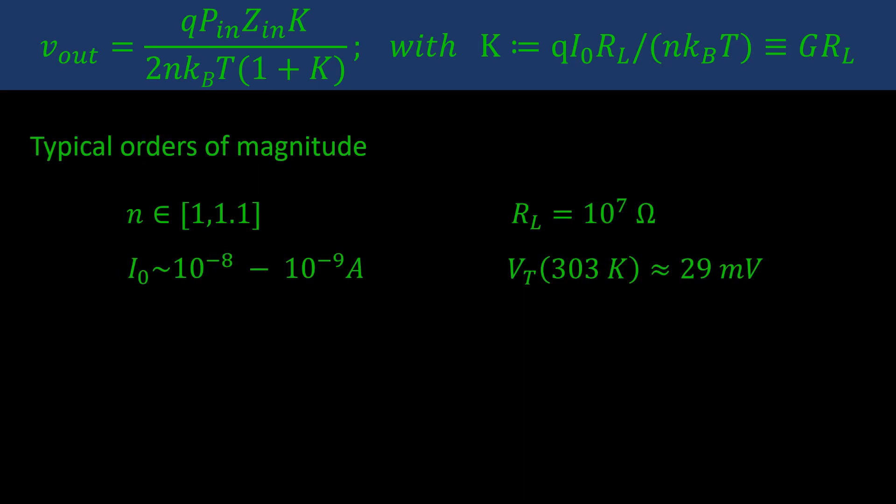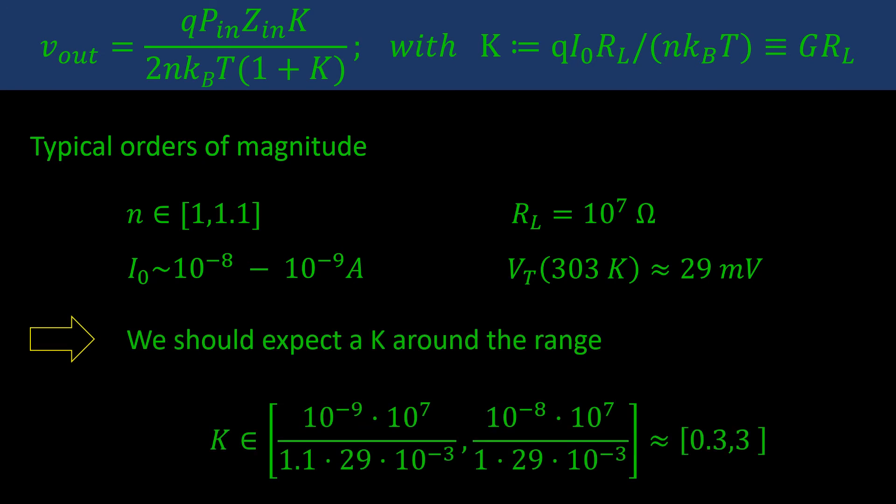We know that the ideality factor should be between 1 and 0.1, and the reverse saturation current should be something between 1 and 10 nA. This is the current that corresponds to the low-barrier Schottky diodes that are used in the HP detectors. We also know the multimeter resistance and the thermal voltage with reasonable accuracy. So we compute a range of possible values for k and obtain that this factor should be something between 0.3 and 3. Now let us try these margins.